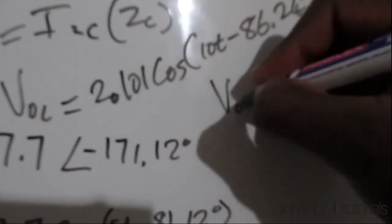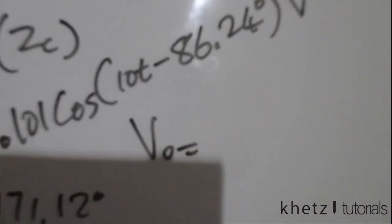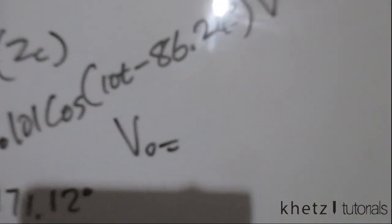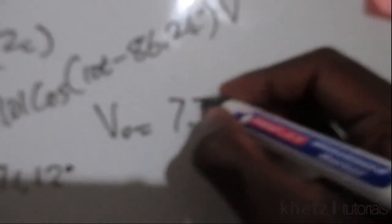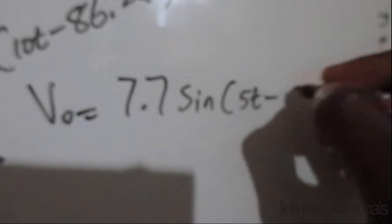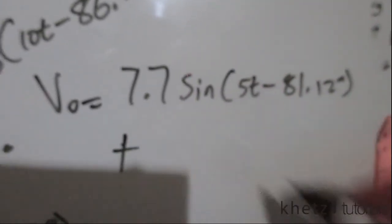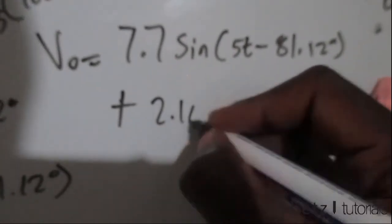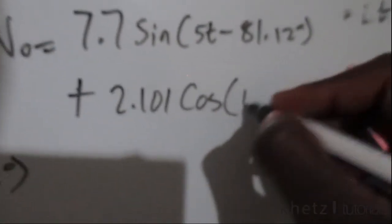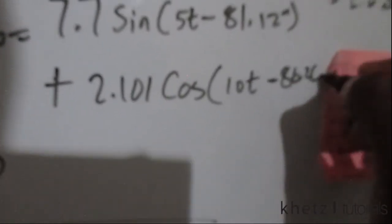The total VO using superposition is then the sum of both contributions: 7.7 sine(5t − 81.12°) plus 2.101 cosine(10t − 86.24°) volts.